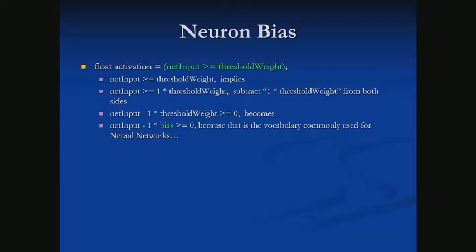We're going to rename that threshold weight value 'bias' — that's just common vocabulary for this. It's still representative of the same concept: a threshold of where we want our true and false points to be.